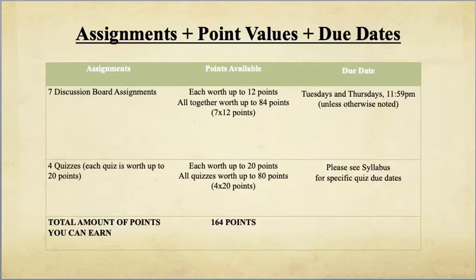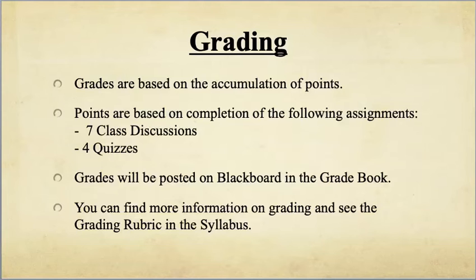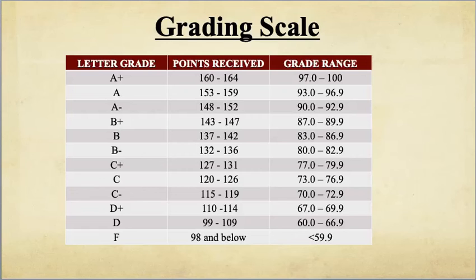In terms of assignments, point values, and due dates: there will be seven discussion board assignments, each worth up to 12 points, for a total of 84 points. They are usually due on Tuesdays and Thursdays at 11:59 p.m., unless noted otherwise. There will also be four quizzes, each worth up to 20 points — since each quiz has 20 questions and one question is worth one point, all quizzes are worth 80 points total. You can see the syllabus for specific dates. The total amount of points you can earn in this short course is 164 points. Your grades will be based on the accumulation of points from these two assignments: seven class discussions and four quizzes. All grades will be posted in the Blackboard gradebook, and you can find more information on grading and the grading rubric in the syllabus. The grading scale shows the grade range and the points you need to receive to get a particular grade.